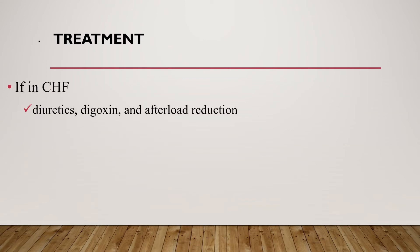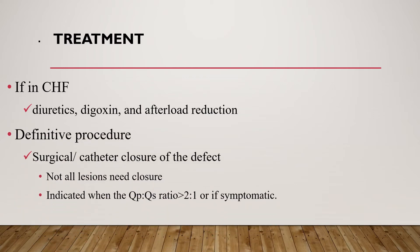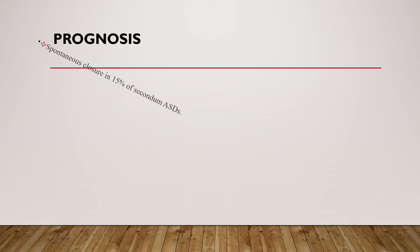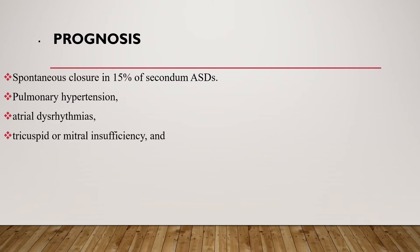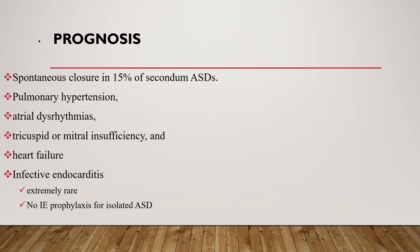Regarding treatment of atrial septal defect, if the patient is in heart failure, diuretics, digoxin, and afterload reduction can be helpful. The definitive treatment is surgical or catheter closure of the defect. The indication for surgical closure is when the ratio of pulmonary to systemic blood flow is greater than 2 to 1, or if the patient is symptomatic from the shunt. Regarding prognosis, spontaneous closure is seen in around 50 percent of secundum ASDs. Pulmonary hypertension, atrial dysrhythmia, tricuspid or mitral insufficiency, heart failure, and rarely infective endocarditis can also occur.